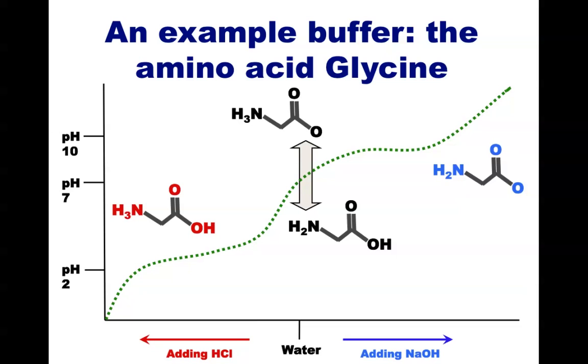Many different molecules can serve as buffers, and some buffer at multiple pHs, as glycine does. The middle of the range in which a molecule serves as buffer, also known as the pKa of that molecule, differs depending on the molecule's structure.